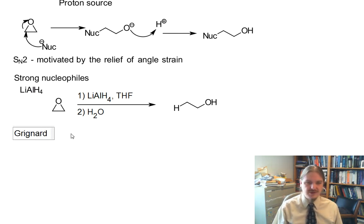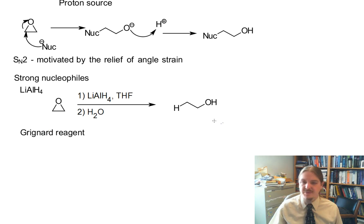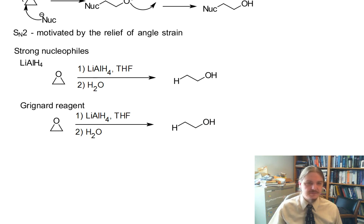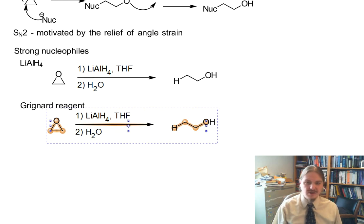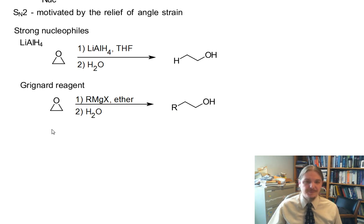Similarly, we could use a Grignard reagent. The Grignard reagent is also used in an aprotic solvent like diethyl ether. In this case, instead of getting a hydrogen at that spot, you would get an alkyl group.